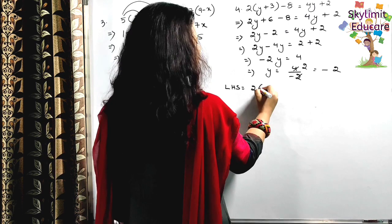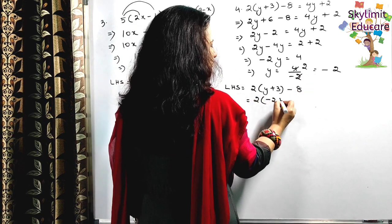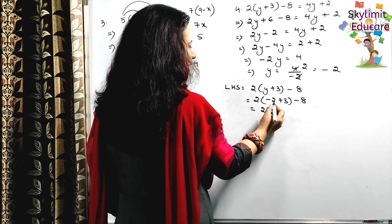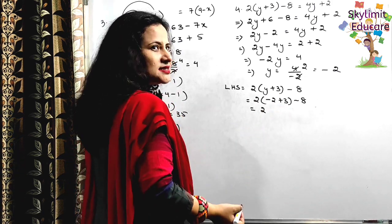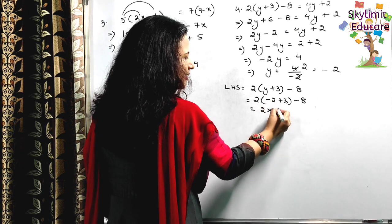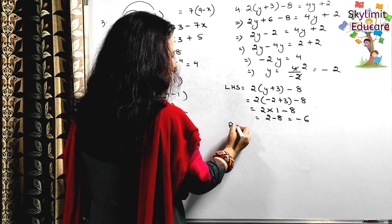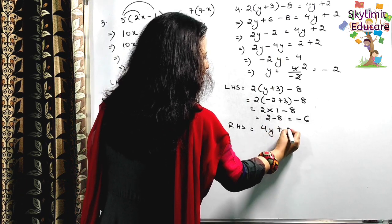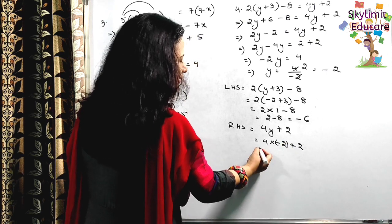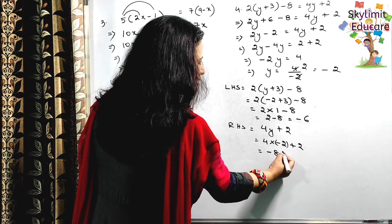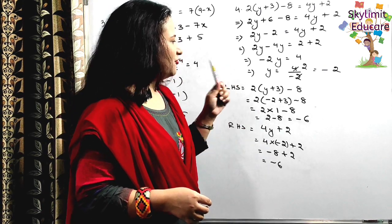Let's verify. LHS is 2(y + 3) - 8: substitute y = minus 2. Inside the bracket: minus 2 + 3 = 1. So 2 × 1 = 2, then 2 - 8 = minus 6. RHS is 4y + 2: so 4 × (minus 2) + 2 = minus 8 + 2 = minus 6. LHS = RHS = minus 6. Hence verified.